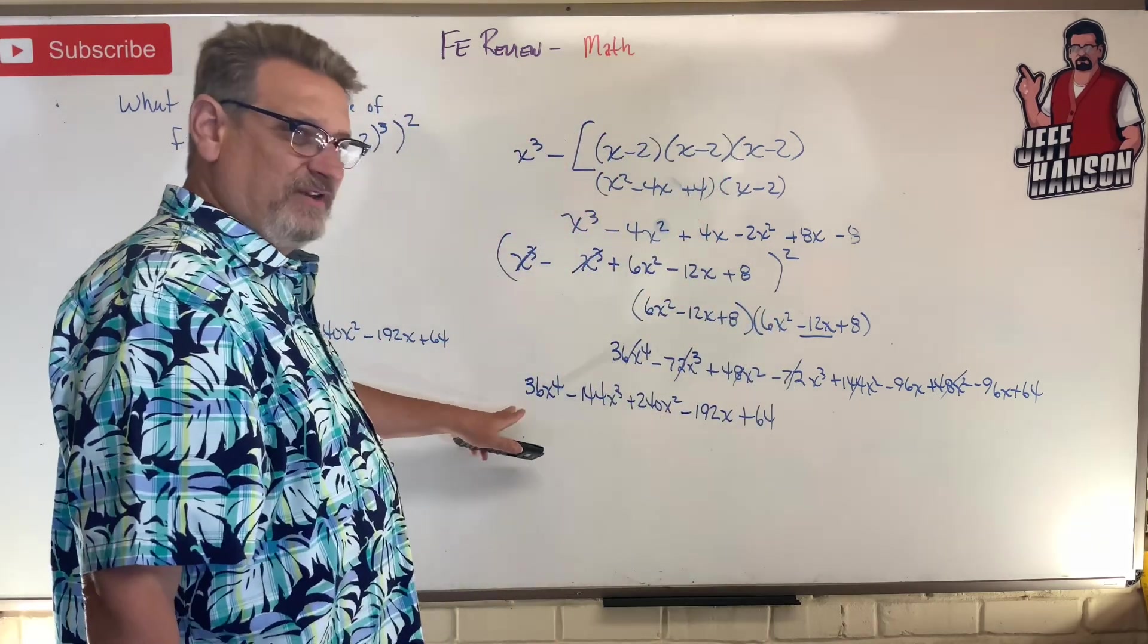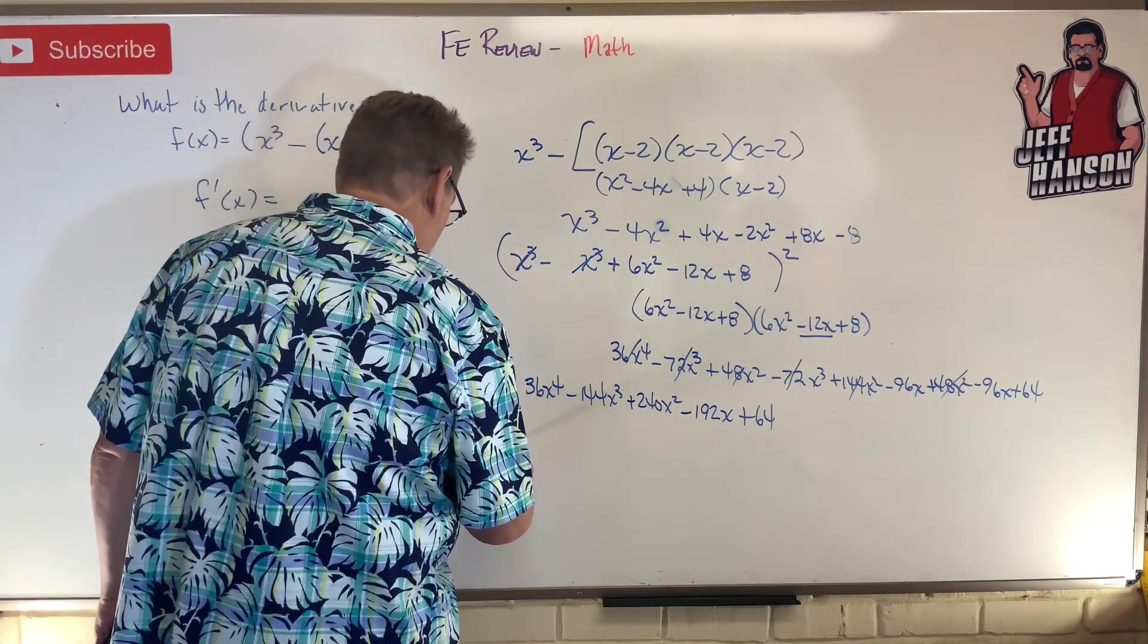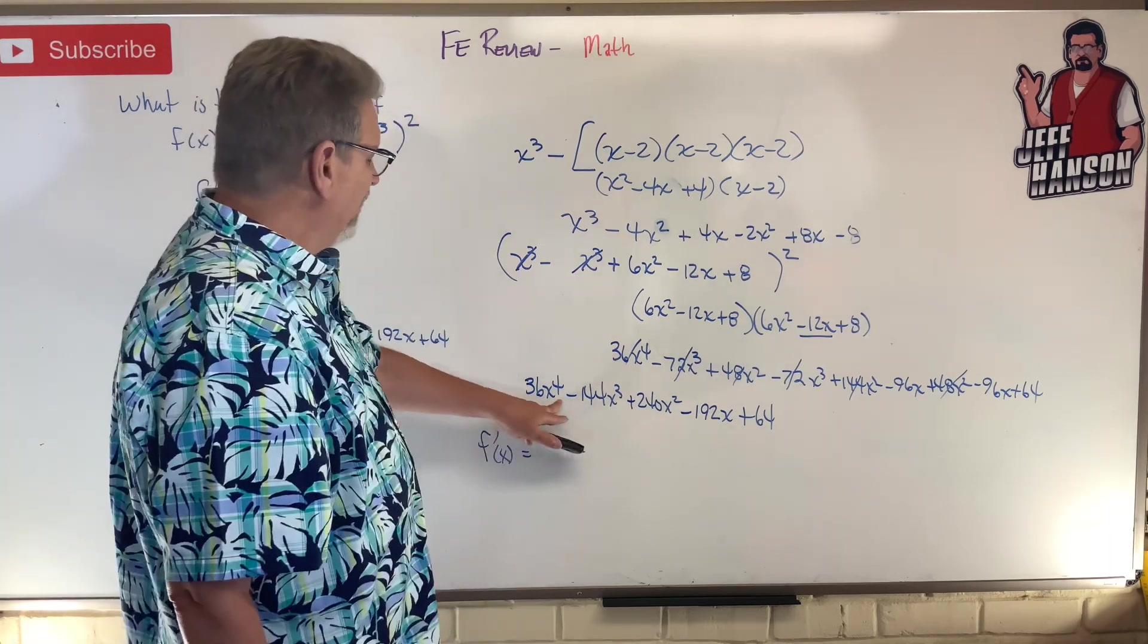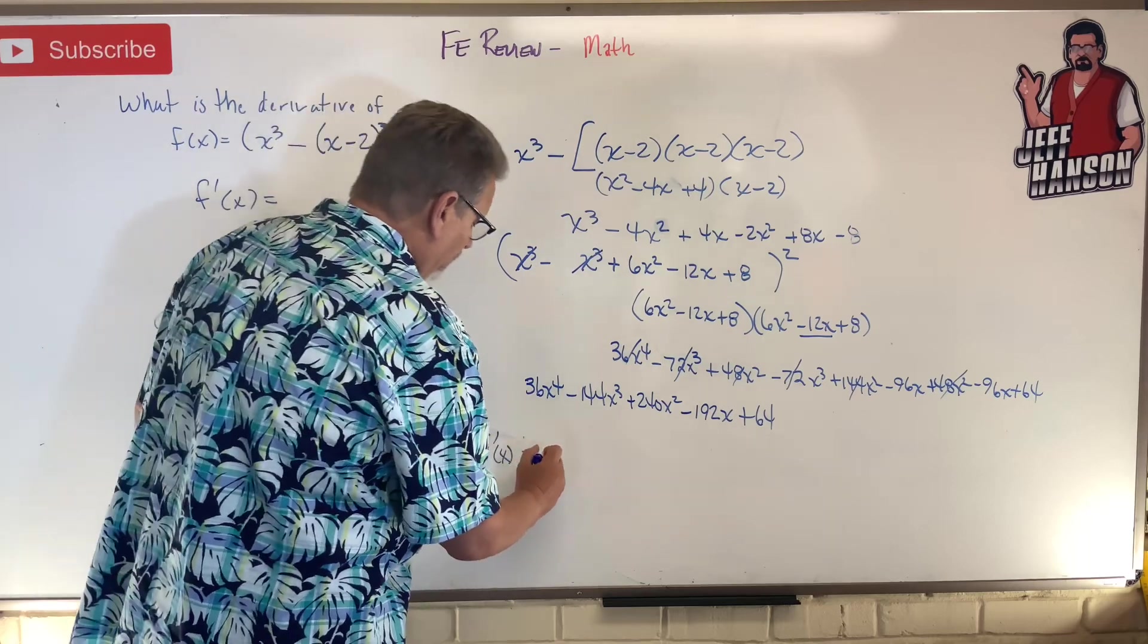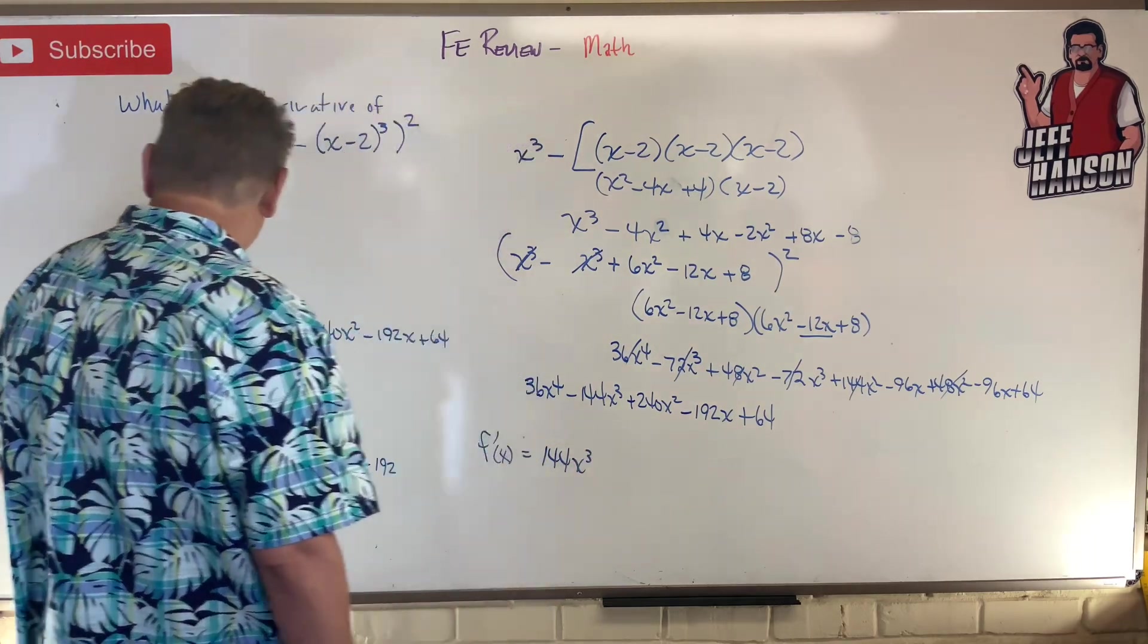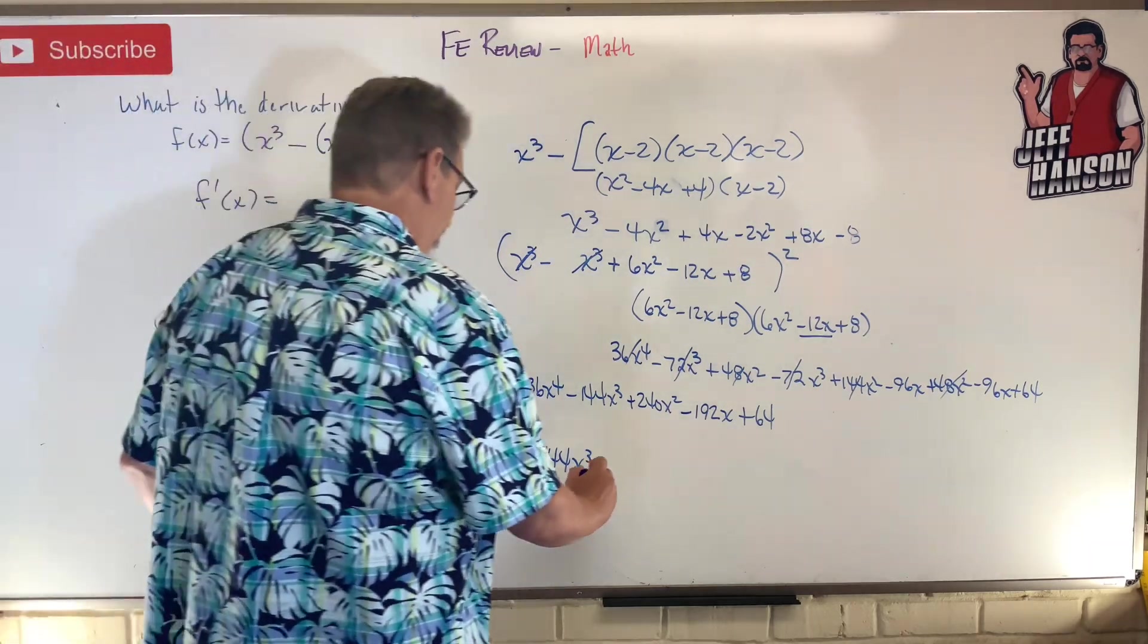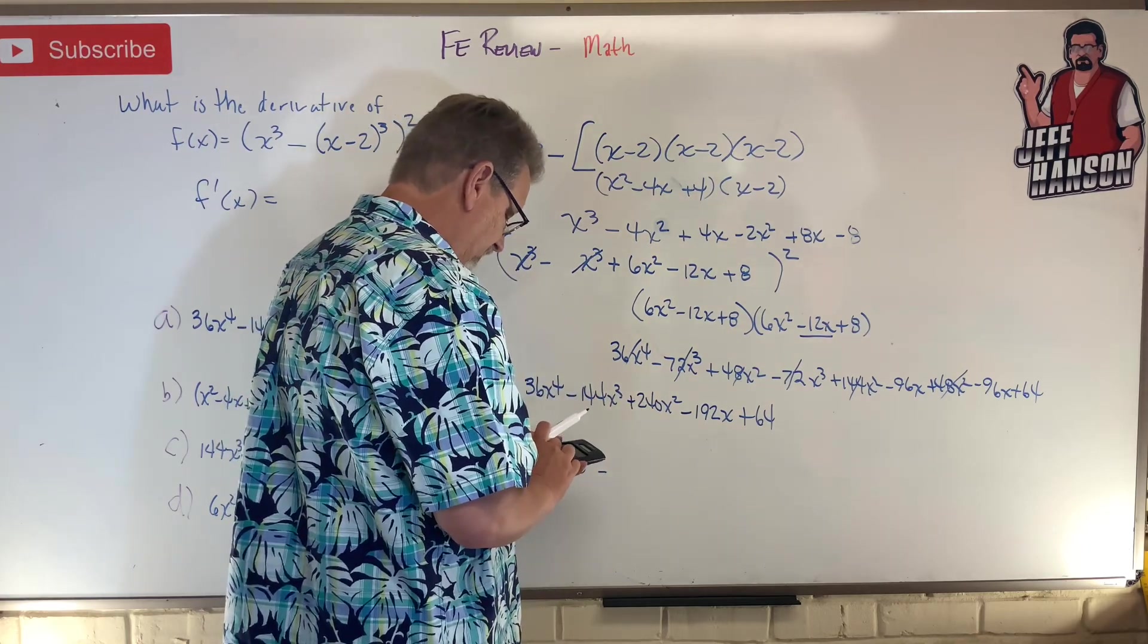Do you remember how to take a derivative of that? So f'(x) equals you lower the exponent by one and you multiply the four in the front there, right? So 36 times 4 is 144x³. Oh, it's looking good. Minus 3 times 144, 144 times 3 equals 432x² + 480x.